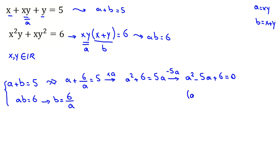And we can factorize as a minus 2 times a minus 3 equal to 0. In the first case, a equal to 2. Then if we replace a with 2 here, b will be 3. If a minus 3 equal to 0 means a equal to 3, then b will be equal to 2.